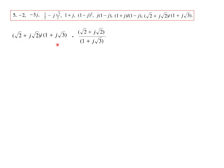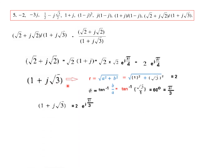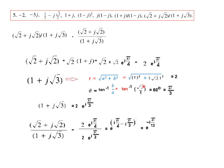Finally, for the last expression, we take root 2 common from the numerator. We already know the value of 1 plus j. For the denominator, we calculate r which is 2 and the angle which is 60 degrees or pi by 3, so 1 plus j root 3 equals 2 e to the j pi by 3. Plugging in the numerator and denominator values and dividing, the final answer is e raised to the power minus j pi by 12.